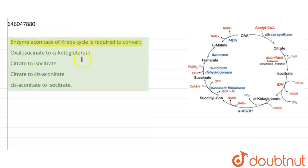The options are oxalosuccinate to alpha-ketoglutarate, citrate to isocitrate, citrate to cisaconitrate or cisaconitrate to isocitrate.